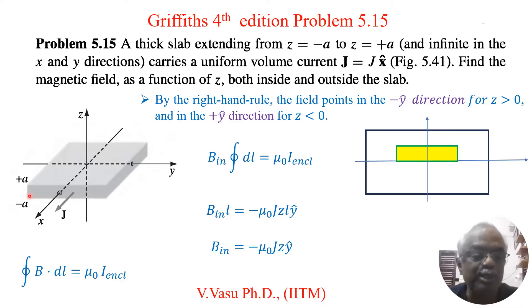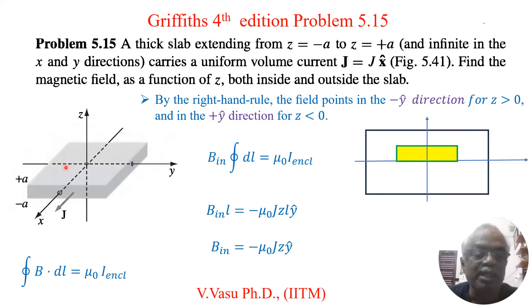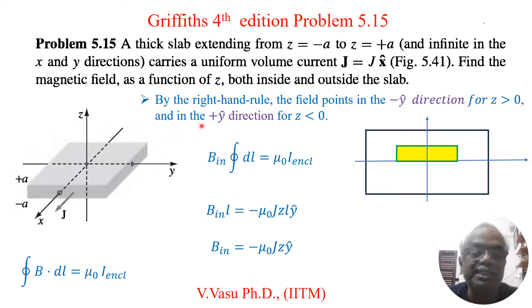The slab is a distance A away from the Y axis — above the Y axis at plus A and below at minus A — and it is infinite in the XY plane. By the right-hand rule, the magnetic field points in the negative Y direction for Z greater than 0 (positive Z axis), and in the positive Y direction for Z less than 0 (negative Z axis).